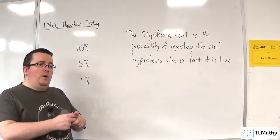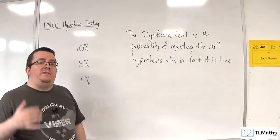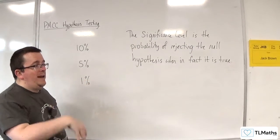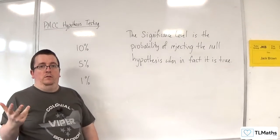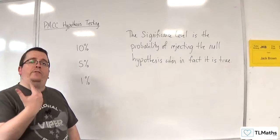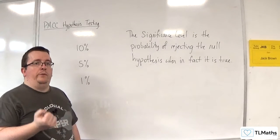So because you are narrowing that gap, that means that it is more difficult to reject the null hypothesis. Which, if the null hypothesis is wrong, you want to do that. So there is this fine balancing act with significance levels and setting them.